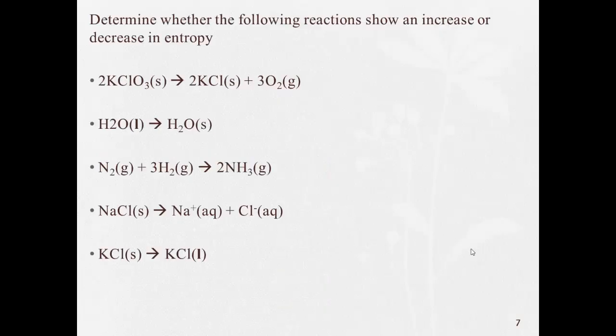All right, question time. So based on what you learned for determining if something's got more or less entropy, determine if each of the following show an increase or decrease in entropy. All right, remember that if you're producing more moles, you're going to tend to have more moles on the product side. That's going to be an increase in entropy. If there's more moles on the reactant side, that'll be a decrease in entropy. And don't forget, entropy increases as we go from solid to liquid to aqueous to gas.